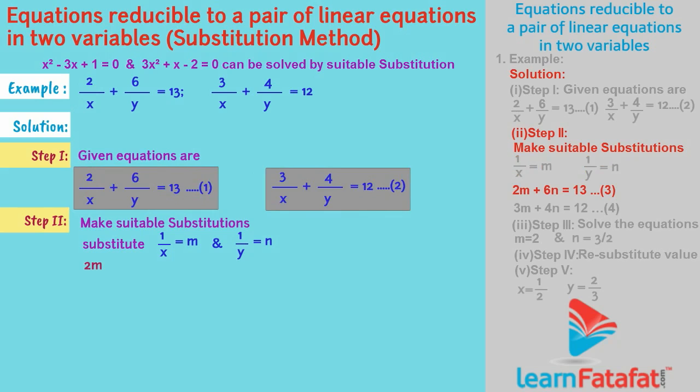2m plus 6n is equal to 13, equation 3. 3m plus 4n is equal to 12, equation 4.